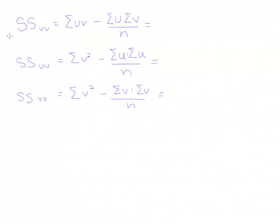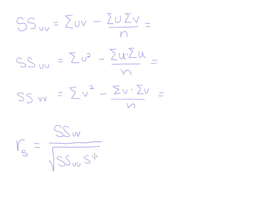The formulas we need are for SS_UV, SS_UU, and SS_VV. The Spearman's rank correlation coefficient R_S uses the same expression as the original R: it's SS_UV divided by the square root of SS_UU times SS_VV. The mixed term is UV, and it's divided by the square root of SS_UU times SS_VV. Once we have these three quantities, it's easy to fill in the formula.